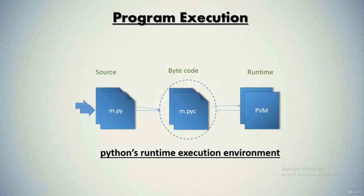This bytecode translation is performed to speed execution — bytecode can run much more quickly than the original source code statements in your text file. The next step is the PVM, which stands for Python Virtual Machine. Once your program has been compiled to bytecode, it is shipped off for execution to the Python Virtual Machine.